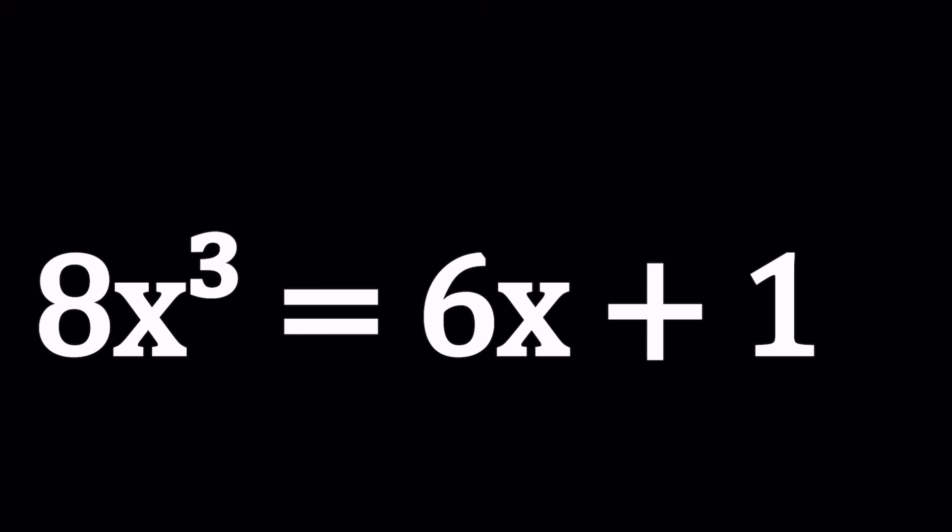So we have 8x cubed equals 6x plus 1 and we're going to be solving for x values. At least one x value, right? Let's see how many values we have. Can you guess? I'll be presenting two methods and one of the methods will probably be incomplete because it's going to be kind of long and boring so bear with me.